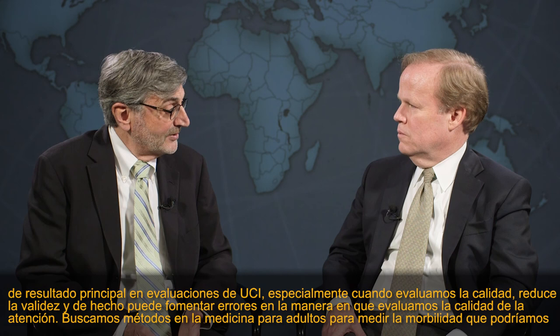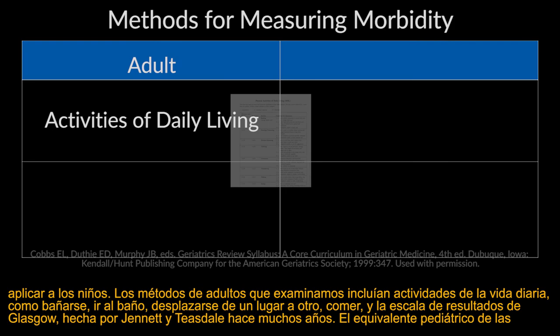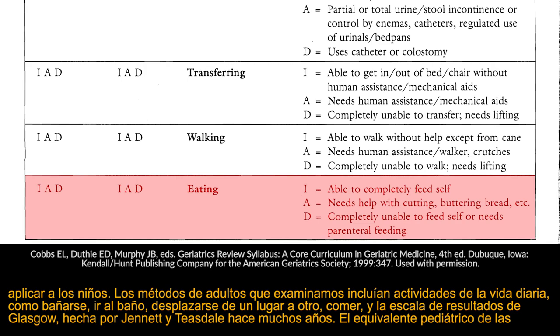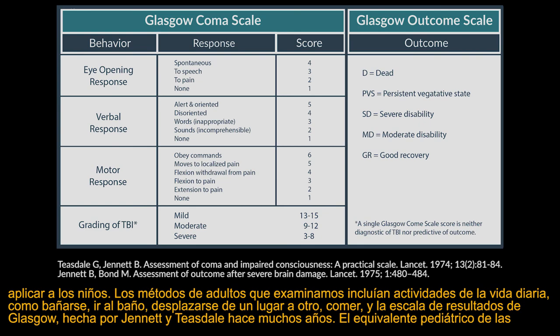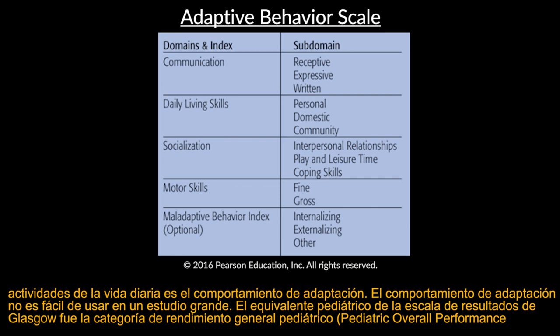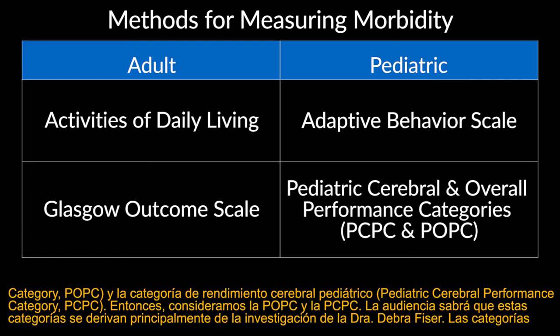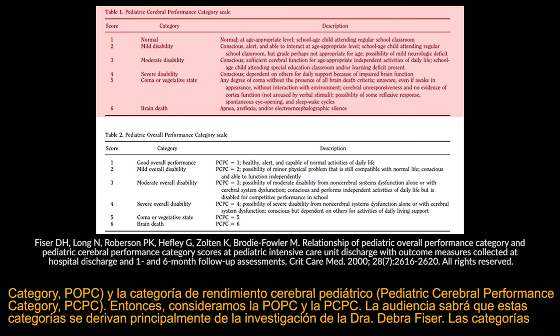We looked for methods in adult medicine to measure morbidity that we could apply to children. The adult methods included activities of daily living — bathing, toileting, locomotion, eating — and the Glasgow Outcome Scale. The pediatric equivalent of adaptive activities of daily living is adaptive behavior, which is not easy to use in a large study. The pediatric equivalent of the Glasgow Outcome Scale was the pediatric cerebral and overall performance categories — the PCPC and POPC — deriving mostly from the research of Dr. Deborah Fizer.